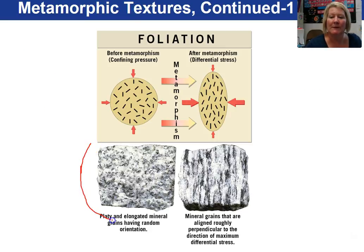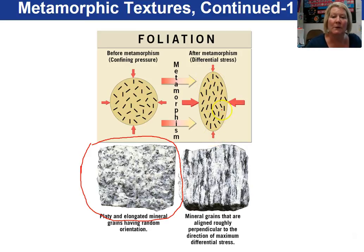For example, let's take an igneous rock — a granite or a diorite. The grains, the minerals that make up the igneous rock are randomly oriented. Then we apply a differential stress on the left and right sides compared to a smaller stress on top and bottom. The minerals will align themselves perpendicular to the primary stress direction, and you get a banding — this is a type of foliation.